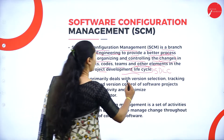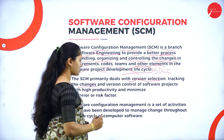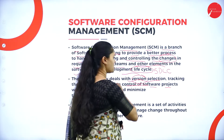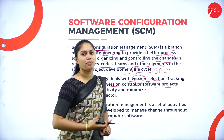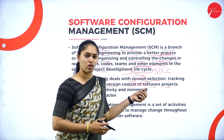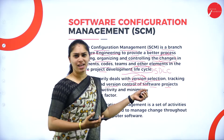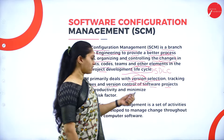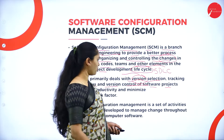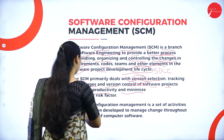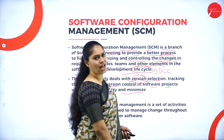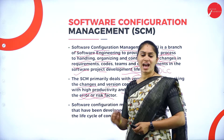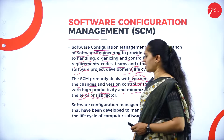Mainly, SCM will deal with version selection, tracking the changes, and version control of a software project. First, we have to concentrate on version selection — that means what needs to be changed, whether I wanted to change the requirement, the team, or any other elements of SDLC. First, that needs to be identified, then we have to track it, and at last, version control of a software project — with high productivity and minimized errors or risk factor. Mainly we have to maximize performance and efficiency, and reduce or minimize errors or risk factor.